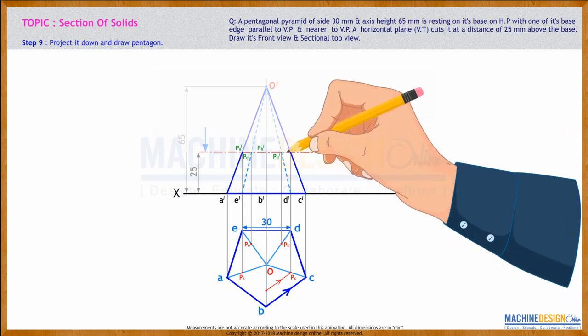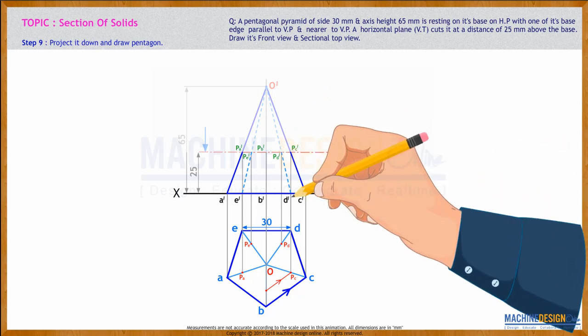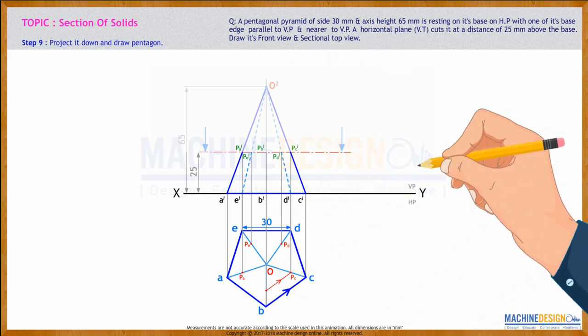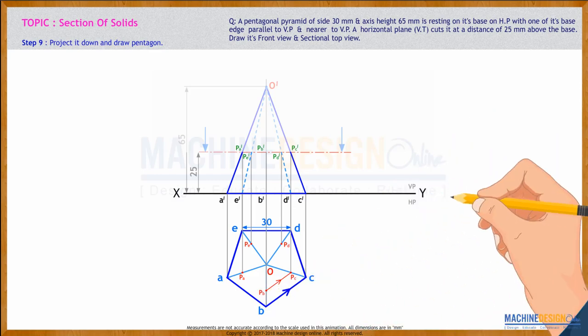See this. This point, first we take from here to the extreme edge, then from there we go down. Since we have taken on O'C', it will be on OC. From there, we take parallel to the base. Wherever we get, that will be point PB.